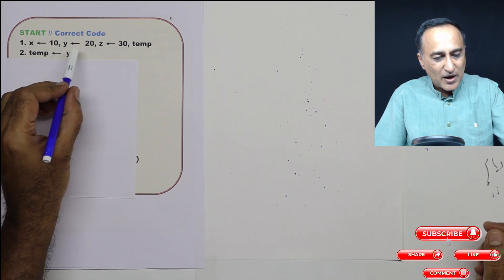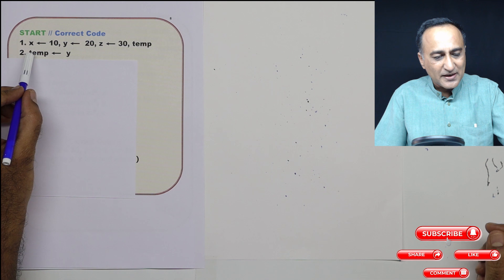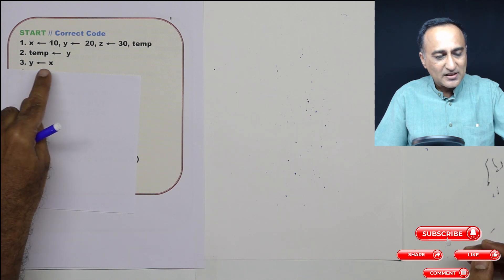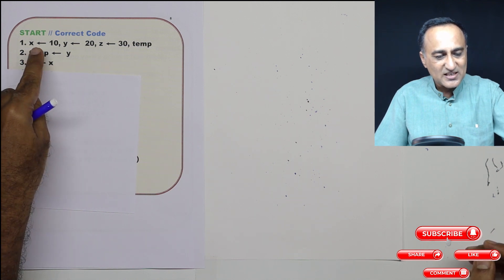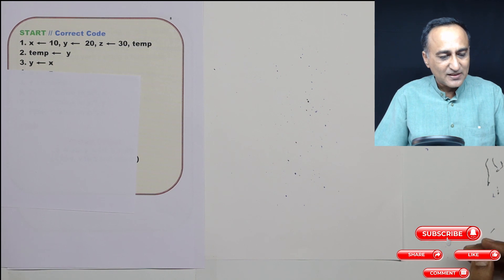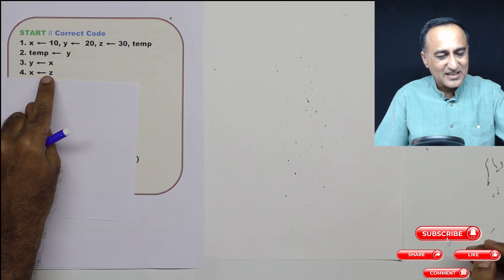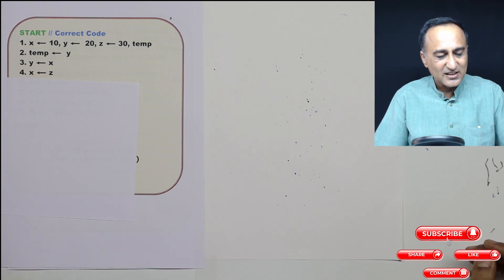Then what I am doing is the value of y, I am keeping it in temp. Now no problem because I have 20 in temp. So I can give y the value of x. So x is 10, y is 10, z is 30. Next step what I do is I give the value of z to x, I say x is assigned the value of z. So x is 30.